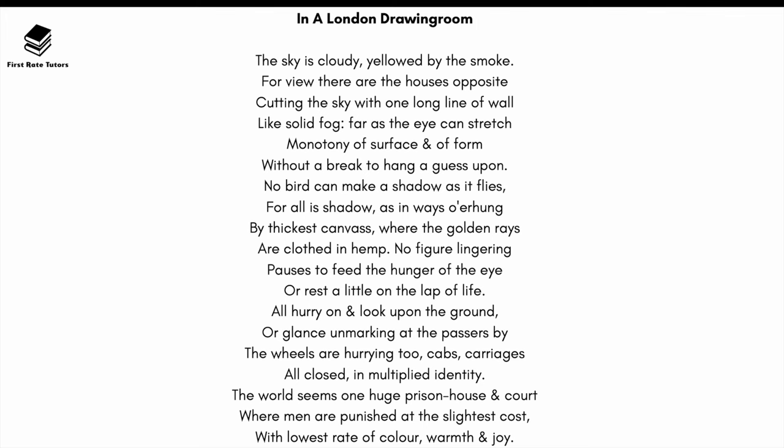In a London Drawing Room. The sky is cloudy, yellowed by the smoke. For view, there are the houses opposite, cutting the sky with one long line of wall, like solid fog, far as the eye can stretch, monotony of surface and of form, without a break to hang a guess upon. No bird can make a shadow as it flies, for all is shadow, as in ways overhung by the thickest canvas, where the golden rays are clothed in hemp. No figure lingering pauses to feed the hunger of the eye, or rest a little on the lap of life. All hurry on and look upon the ground, or glance unmarking at the passers-by. The wheels are hurrying too — cabs, carriages, all closed in multiple identity. The world seems one huge prison house and court, where men are punished at the slightest cost, with lowest rate of colour, warmth, and joy.